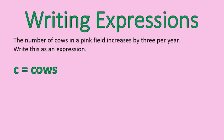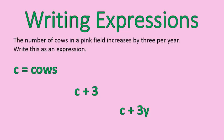C is for cows, and you might think you would just say C plus 3 — the cows are increasing by 3. After one year that would be correct, but after two years it would be increasing by 6, and after three years by 9, so that doesn't really work long term. What we have to do is increase it by 3 times the number of years. So the expression C plus 3y represents the number of cows plus 3 times the number of years, which captures everything in the problem.